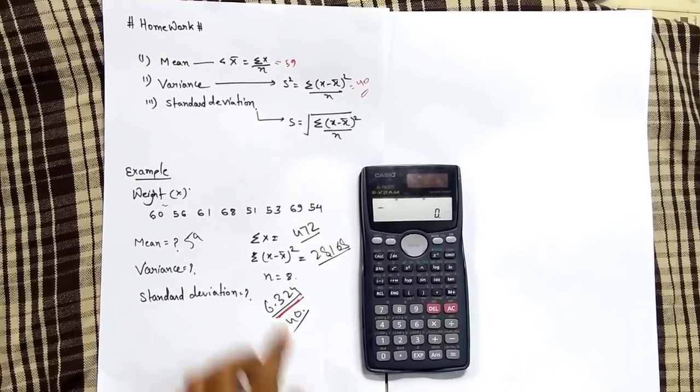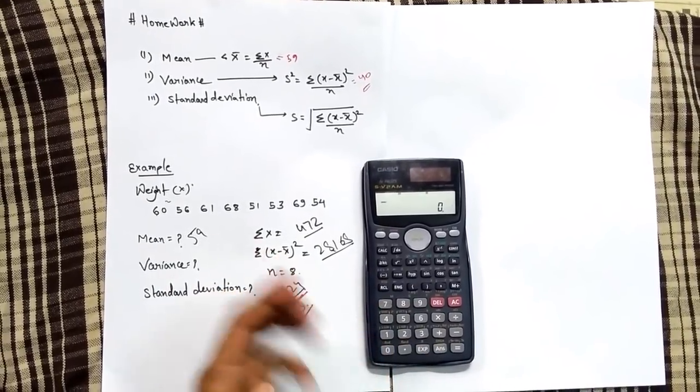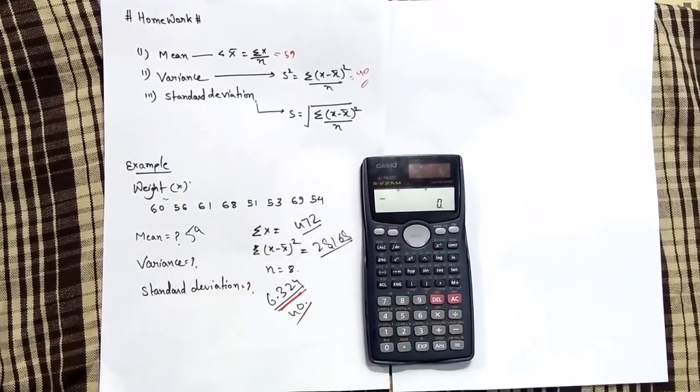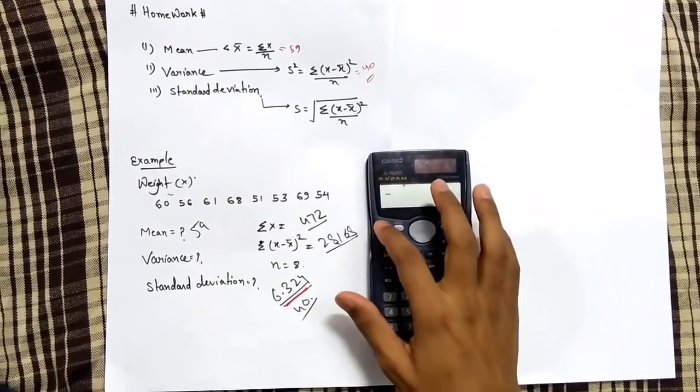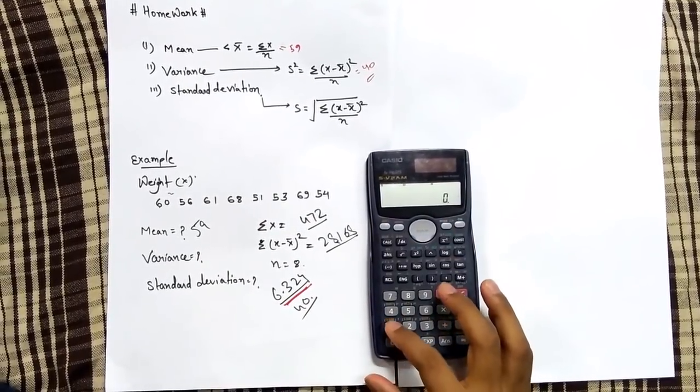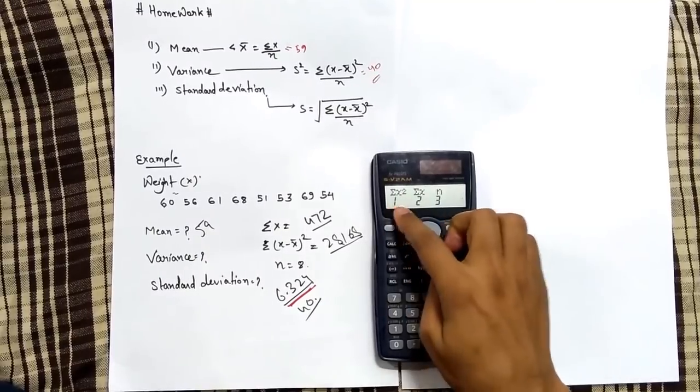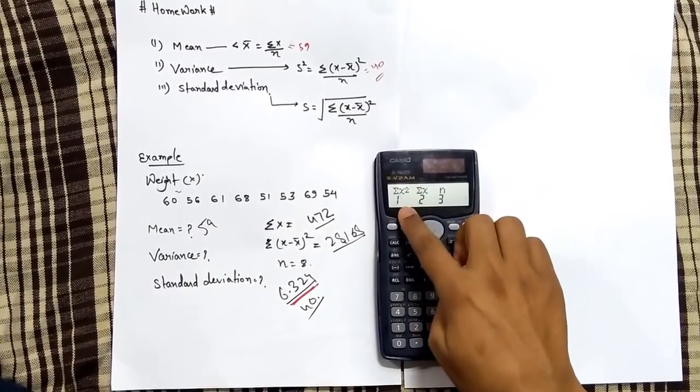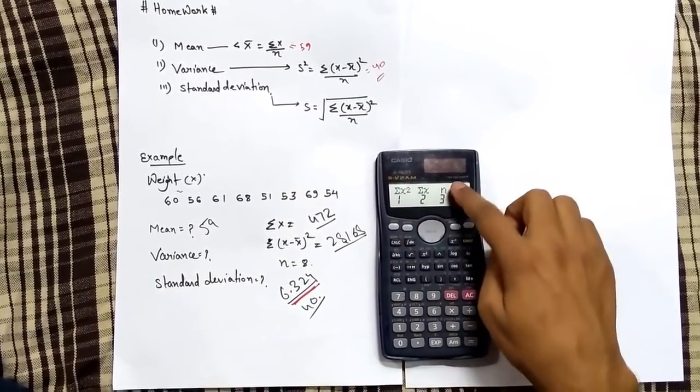But in exam you have to show all these values: X̄, X minus X̄ square and all. So what you can do is press shift and then press 1. You can see here sigma of X square, then sigma of X, number of variables, number of inputs you have.